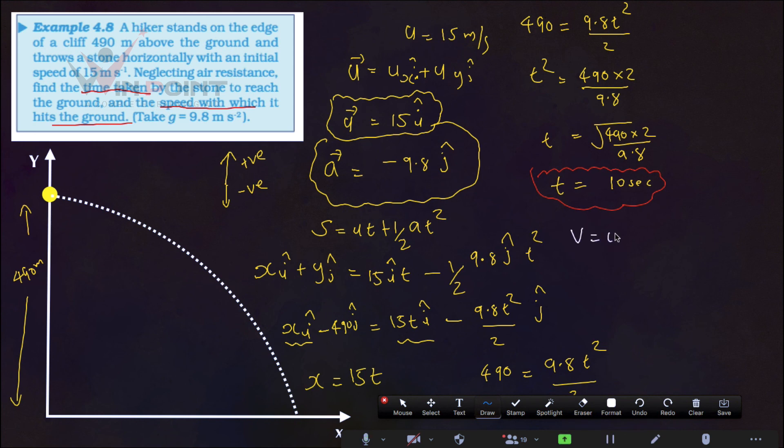V equals U plus AT. Vector V equals, what is the value of U? It is 15I. What is the value of A? Minus 9.8J cap into 10. Time is 10. V equals 15I plus 10 into 9.8. It is minus 98J.